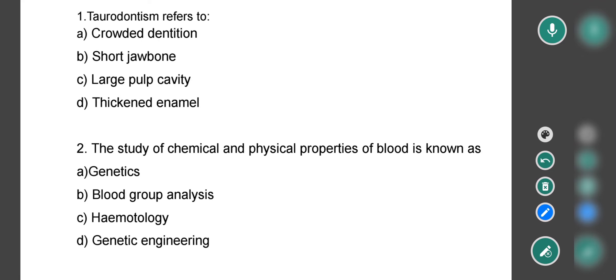The first question is: Taurodontism refers to - crowded dentition, short jawbone, large pulp cavity, or thickened enamel? The correct option is option C, that is large pulp cavity. In our early hominids, a large pulp cavity was found, which is called taurodontism.